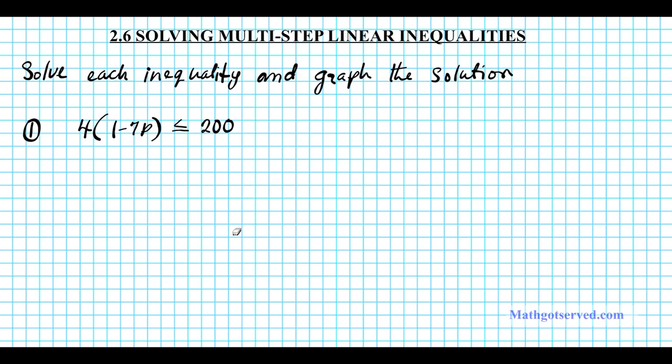In this situation this parenthesis kind of complicates things. So how do we eliminate it? We'll simply distribute. Distribute 4 to these two numbers in the parenthesis positive 1 and negative 7p.